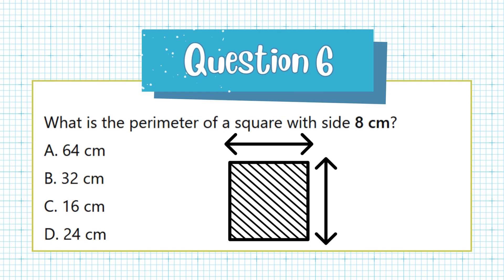Question 6. What is the perimeter of a square with side 8 cm? a. 64 cm, b. 32 cm, c. 16 cm, d. 24 cm.